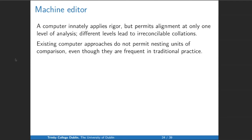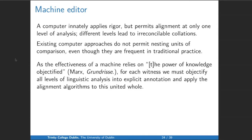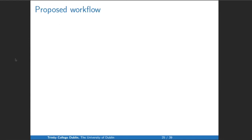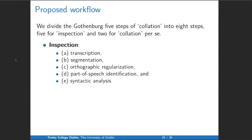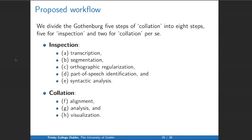As the effectiveness of a machine relies on the power of knowledge objectified — to quote Marx — for each witness we must objectify all levels of linguistic analysis into explicit annotation and then apply the alignment algorithm to this united whole. This is my proposed workflow: we divide the Gothenburg five steps of collation into eight steps — five for inspection and two for collation. This is not meant dogmatically; if a project got up and running we might need 11 or 15 steps. The inspection steps consist of transcription, segmentation, orthographic regularization, part-of-speech identification, and syntactic analysis; collation consists of alignment, analysis, and visualization.